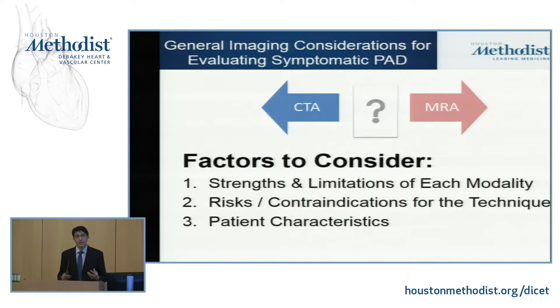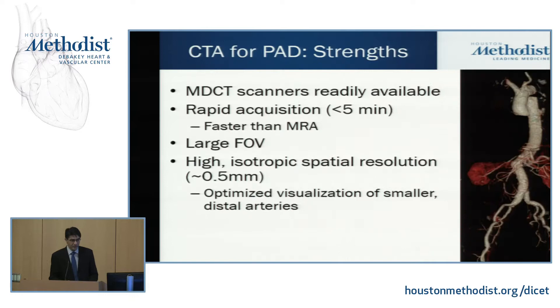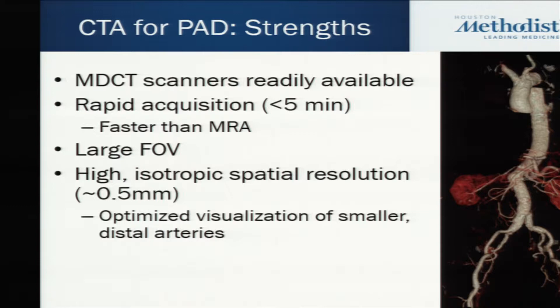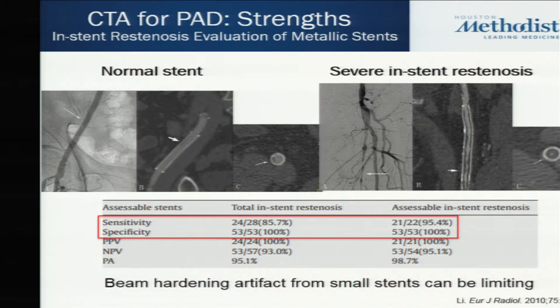Some advantages of CT: there is probably not a hospital in this country without a CT scanner. These scans are done exceptionally fast — within less than five minutes you can scan the patient from head to toe. It's a much faster technique than MRA. Spatial resolution is almost down to 0.5 millimeters, and there is a very large field of view allowing evaluation of end organs. Additionally, CT has no problem with metal, so it can nicely evaluate stents, especially large stents.